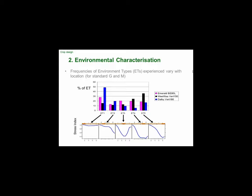In different places — central Queensland, northern New South Wales, and the Downs — you can see the five environment types and how they change in frequency. The Darling Downs sites tend to have more of the lower stress environments, with deeper soil and more favourable rainfall, whereas northern New South Wales and central Queensland tend to have more frequent terminal stress environments. Just where you are changes the frequencies, but each year will be different as well.